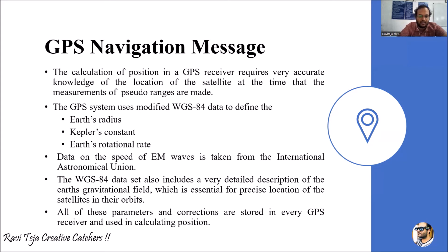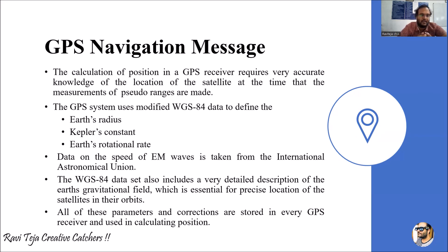The WGS 84 data set also includes a very detailed description of the earth's gravitational field, which is essential for the precise location of satellites in their orbits. Based on this data set, all parameters and corrections are stored in every GPS receiver and used in the calculation of position. This is the GPS navigation message — defined based on all these parameters and the WGS 84 data set.